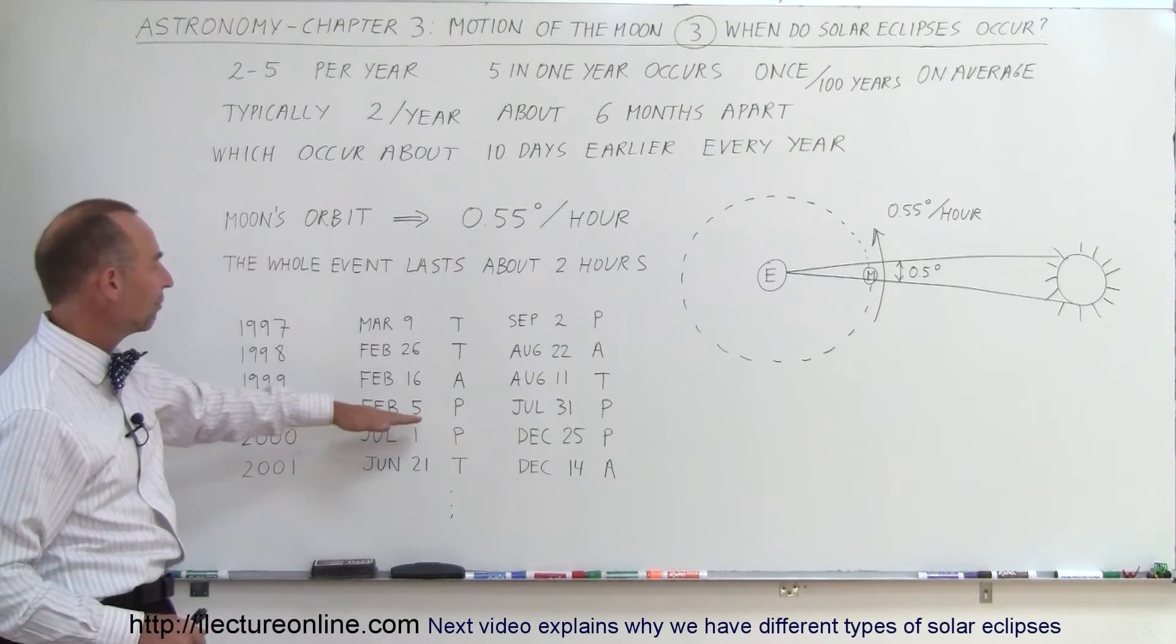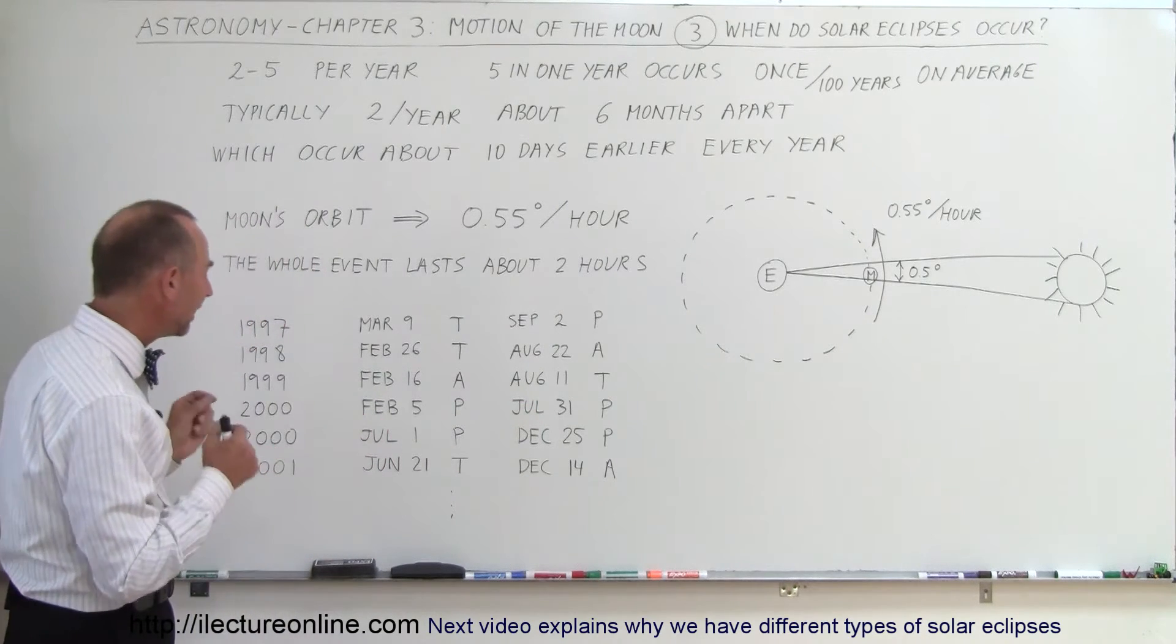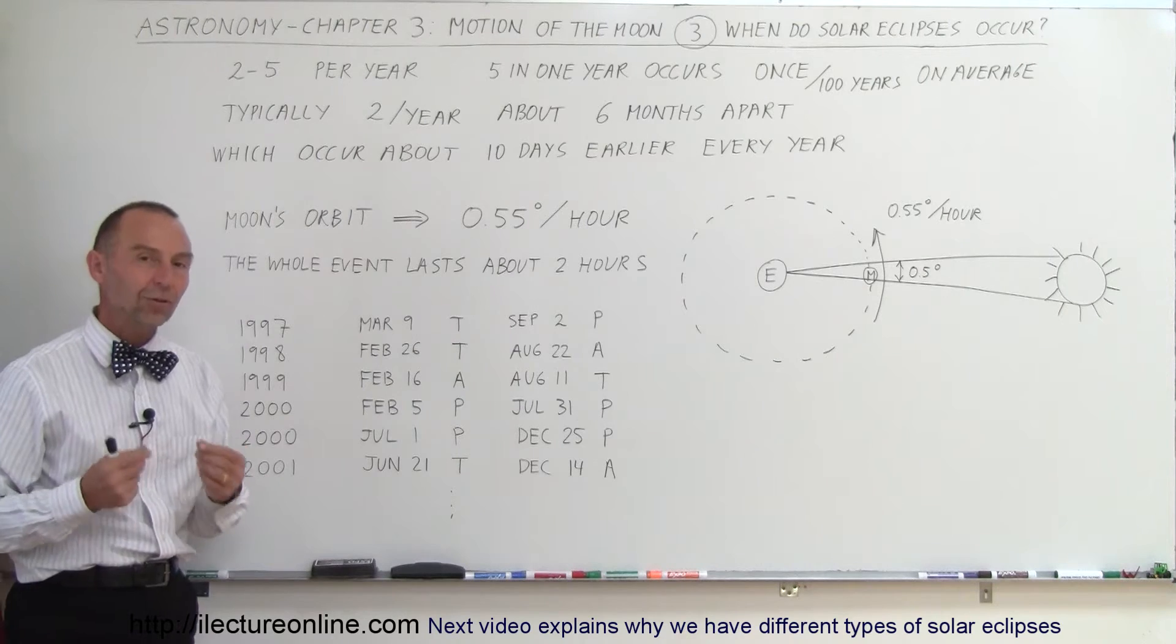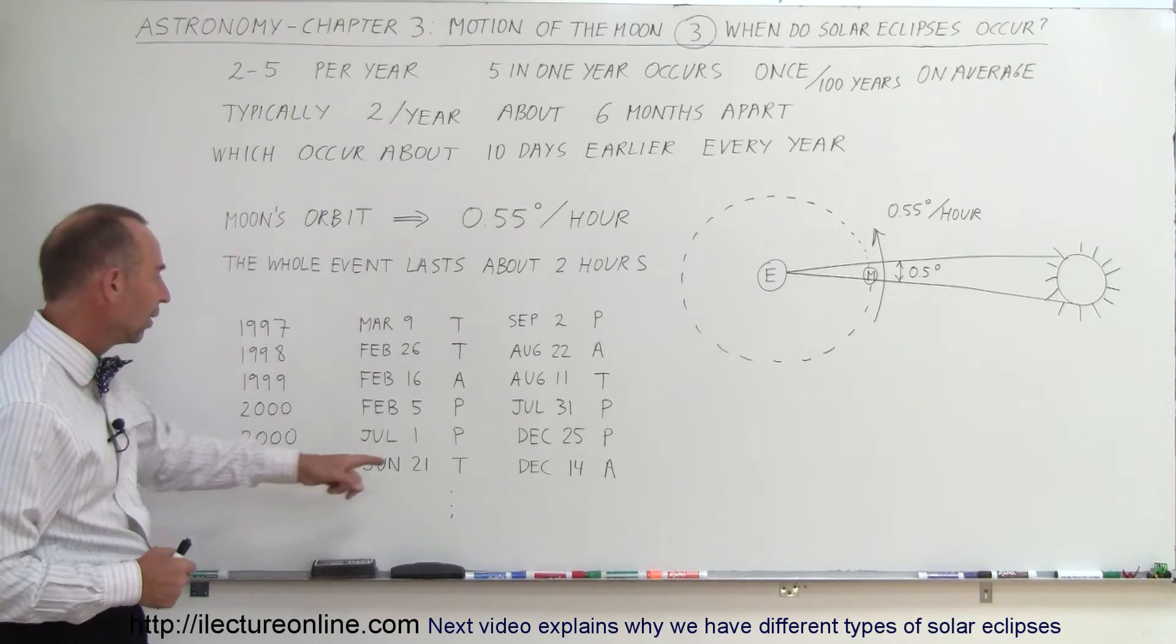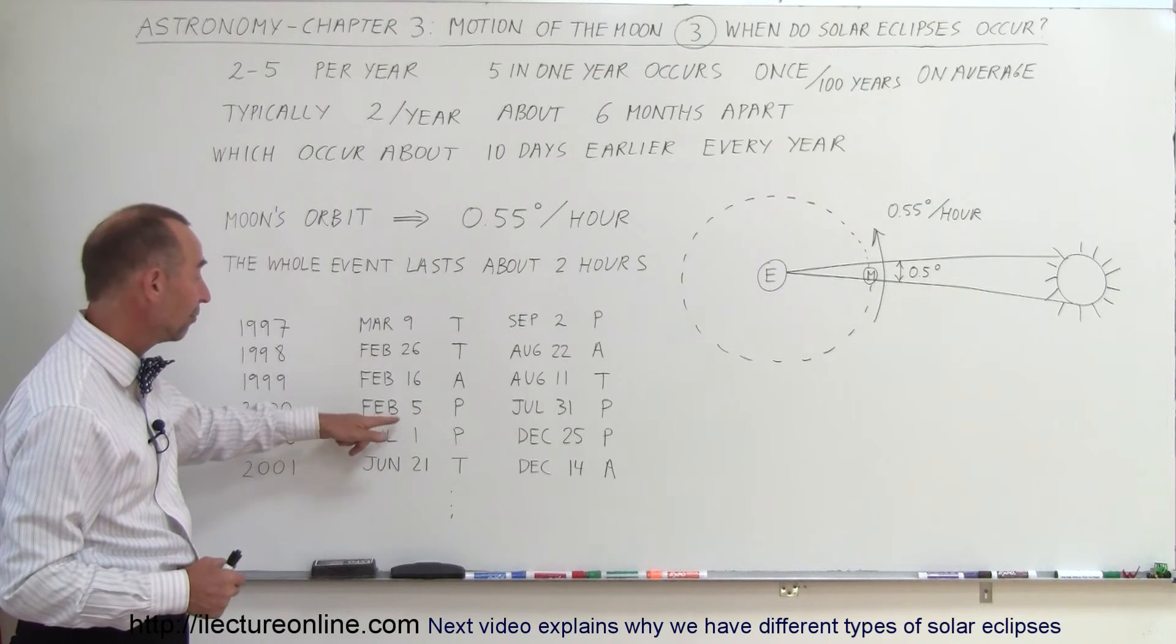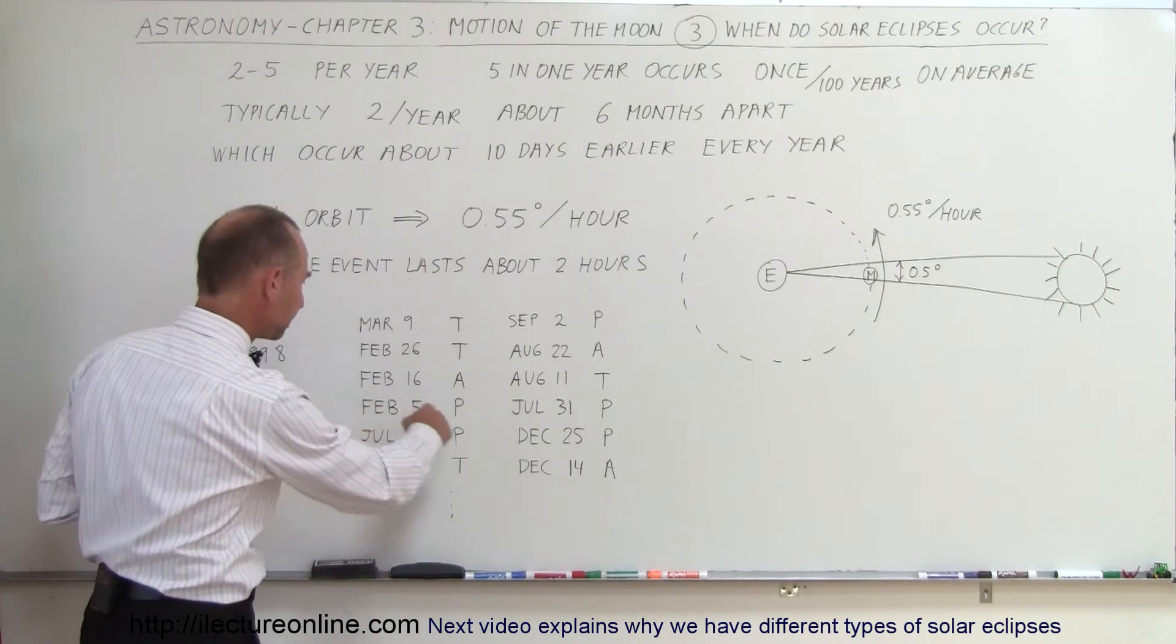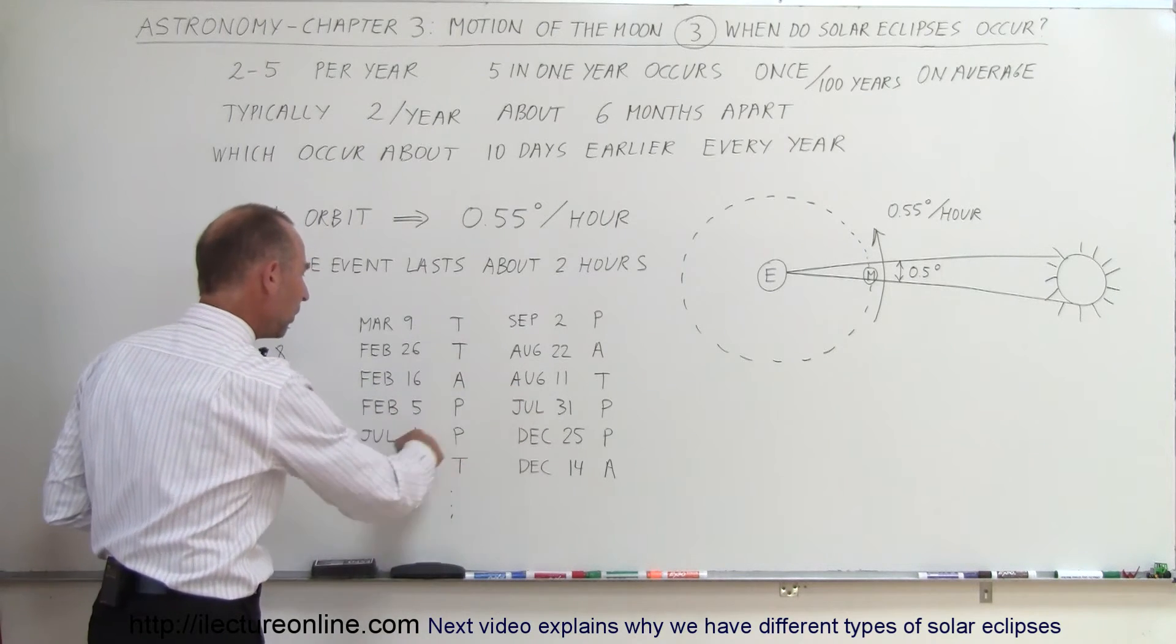Then in 2000, we had one on February 5th and July 31st. So this pattern continues, and then all of a sudden, you see that we had another set of solar eclipses in the year 2000. We had one on July 31st and one on July 1st. We had one on February 5th and December 25th. Notice that those days are about a month apart.